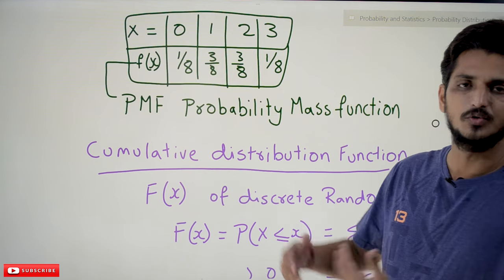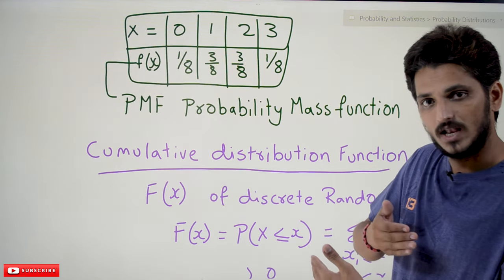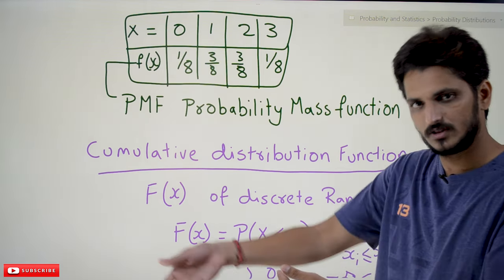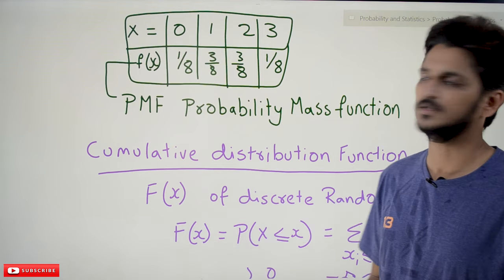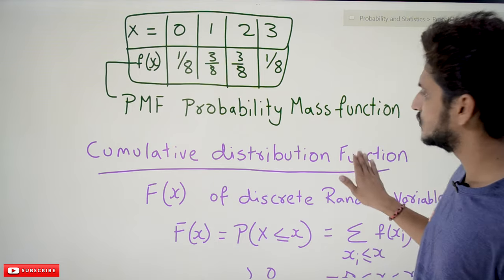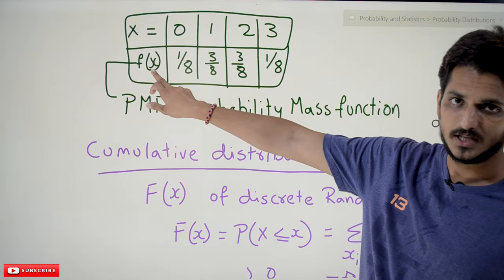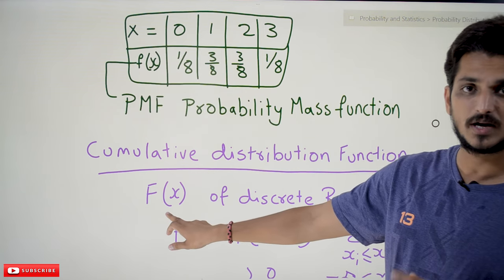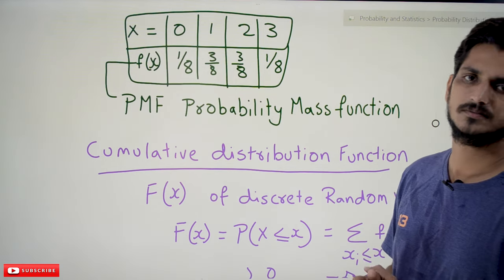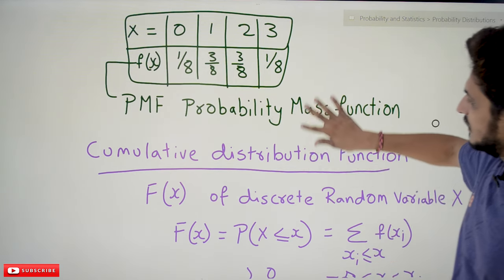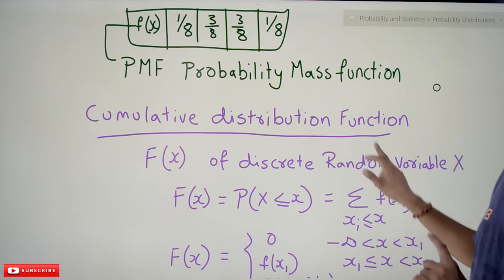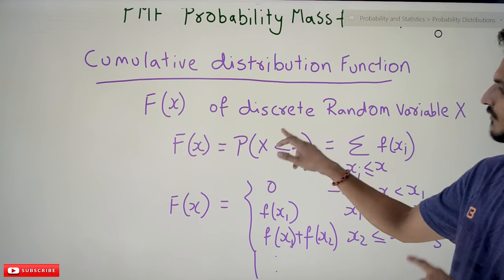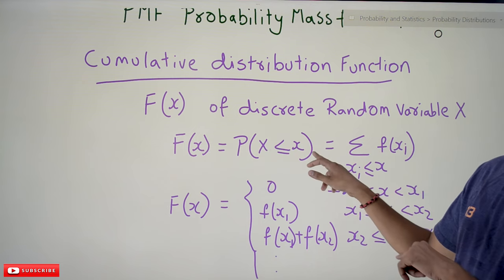Now coming to the concept of cumulative distribution function. The name itself says cumulative means adding the previous values — each next value is added with the next. Probability mass function is given by small f(x), whereas cumulative distribution function is given by capital F(x). Capital F(x) for a discrete random variable x is defined as F(x) = P(X ≤ x).